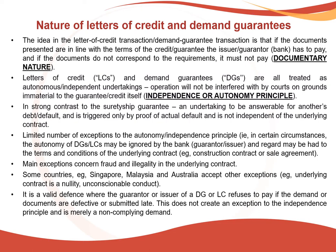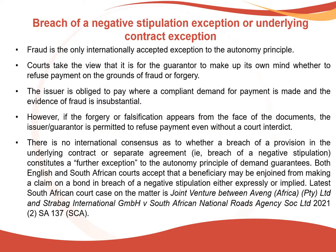It is a valid event where the guarantor or issuer of a demand guarantee or letter of credit refuses to pay if the demand or documents are defective or submitted late. This does not, however, create an exception to the independence principle and is merely a non-compliant demand. Fraud is the only internationally accepted exception to the autonomy principle. Courts take the view that it is for the guarantor to make up its own mind whether to refuse payment on the grounds of fraud or forgery. The issuer is obliged to pay where a compliant demand for payment is made and the evidence of fraud is insubstantial. However, if the fraud or falsification appears from the face of the documents, the issuer or the guarantor is permitted to refuse payment even without a court interdict.